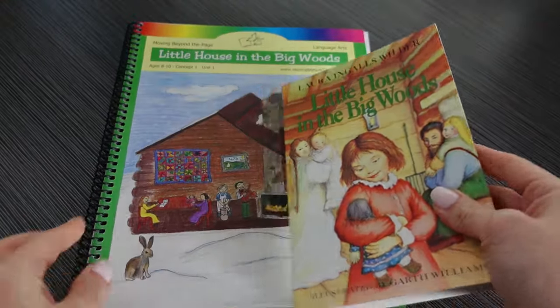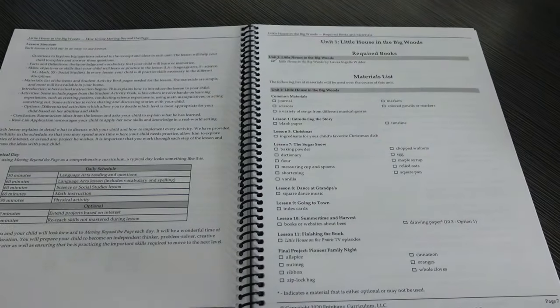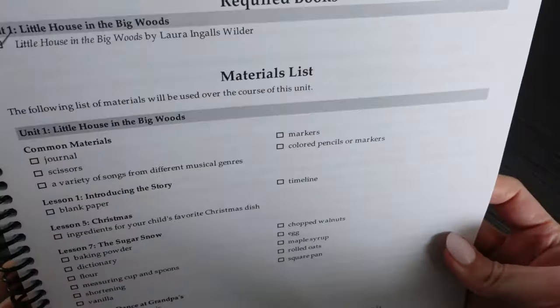So the first unit is going to be Little House in the Big Woods, which goes along with the book by Laura Ingalls Wilder. My daughter has actually already read this book. We read it two years ago, but she was really young. She was in first grade. So I am excited for her to read it and kind of have a different take on the unit study.